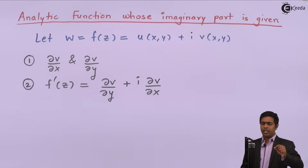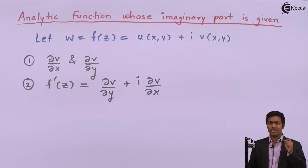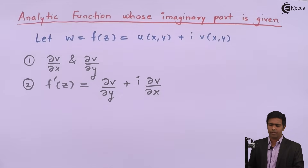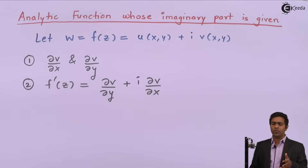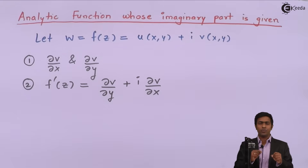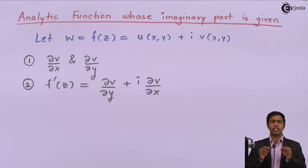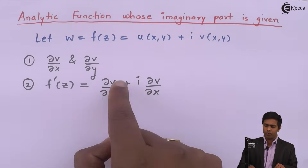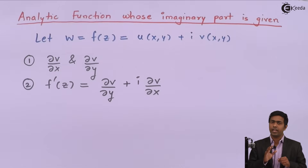Since the imaginary part of the analytic function is given, the function we are finding is analytic, and hence we can use this property. We substitute the two values from step one to get f'(z). Since v is a function of x and y, and we are differentiating partially, we get f'(z) in terms of x and y, because ∂v/∂y and ∂v/∂x are both in terms of x and y.